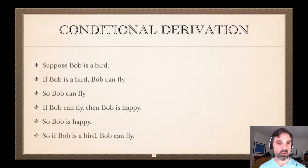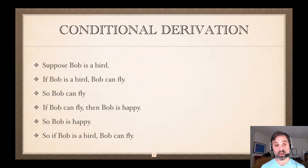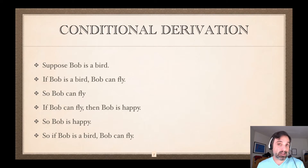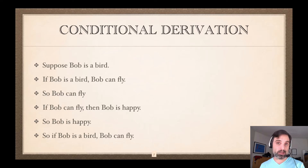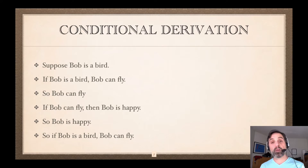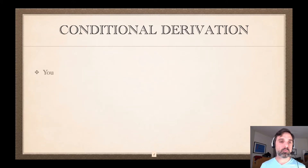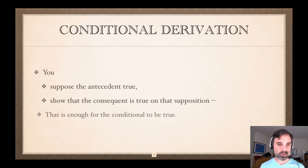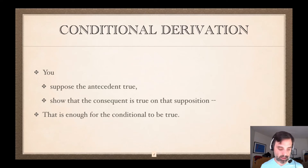So what have we done? We've supposed that Bob is a bird and argued to Bob is happy, and so we can conclude that if Bob is a bird then Bob is happy. We suppose the antecedent and we argue to the consequent, and when we're done with that we say the conditional is true. We don't know whether or not the antecedent is true, but because we can argue from the antecedent to the consequent, we know that the conditional is true.